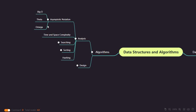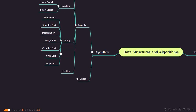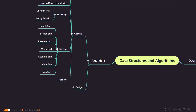We'll also cover space complexity, and then searching — namely linear search and binary search. For sorting, these are all the sorting algorithms you should know by the end of this course or foundation: bubble sort, selection sort, insertion sort, and others. Then we have a technique called hashing, which we'll be understanding as well. This was the analysis part — here we will be analyzing what exactly linear search and binary search do, what the complexity is.